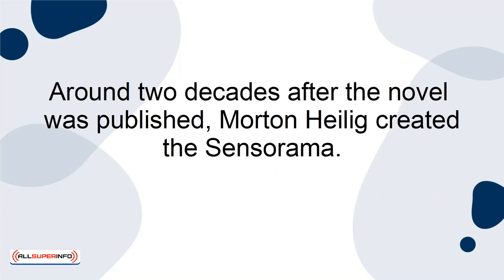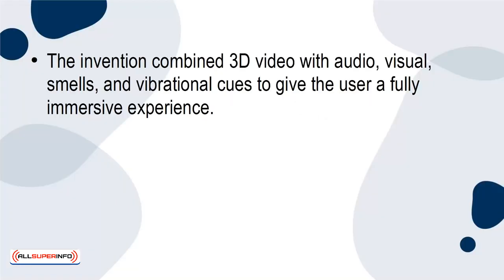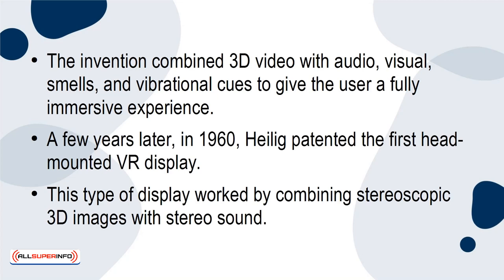Around two decades after the novel was published, Morton Heilig created the Sensorama — a machine that simulated what it would look and feel like to ride a motorcycle in Brooklyn. The invention combined 3D video with audio, visual, smells, and vibrational cues to give the user a fully immersive experience. A few years later, in 1960, Heilig patented the first head-mounted VR display, which worked by combining stereoscopic 3D images with stereo sound.